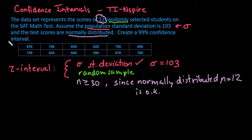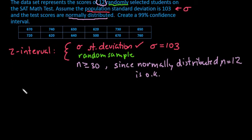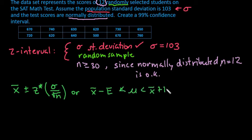If you recall, the formula for the z-interval is x-bar plus or minus the z-critical or z-star, whichever one your textbook uses, times sigma divided by the square root of n. Or you could separate that out: x-bar minus your error, with your mean in between, and then x-bar plus your error.